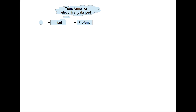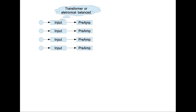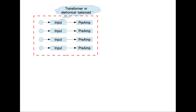This is where something happens to your signal: what the transformer does and what the preamp does, meaning total harmonic distortion, adding noise, things like that. This is what I call the input stage — you have the input and the preamp.